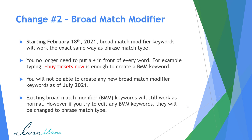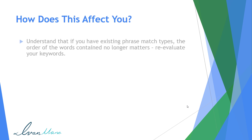So these are the changes: broad match modifier becoming obsolete, phrase match replacing it, and Google becoming smarter and determining when the order matters. So how does this affect you? Well, first of all, understand that if you have existing phrase match types, the order no longer matters, so you should reevaluate your keywords. I don't know how good the Google algorithm will be — for example, if you're targeting people that want to buy stuff for Halloween and you're saying 'Halloween party' versus 'can I throw my birthday party on Halloween?' That's a completely different search query, and I don't know if Google is going to respect order for keywords like that.